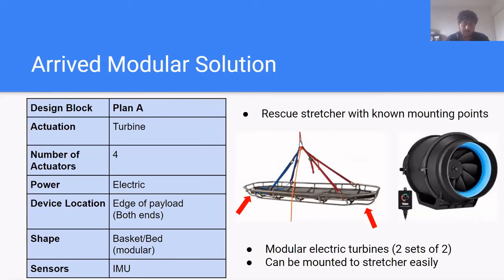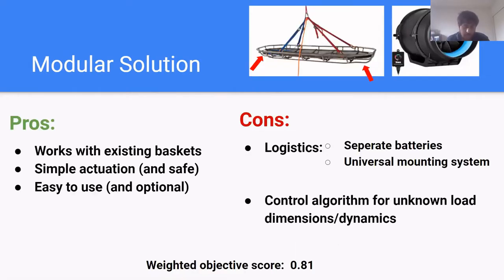From our objective tree and morphological chart, this is the solution we have arrived to. This design will use four ducted fans mounted on both sides of the stretcher powered by batteries and CPU. This design should be modular and should be mounted onto structures easily. Here are the pros and cons of our design. In the electrical subsystem design section, our system dynamics and control section, we address the solutions to the cons of our design, which include logistics and our control algorithm.